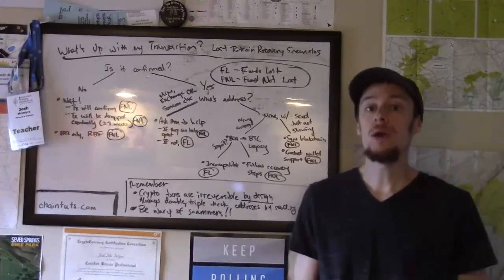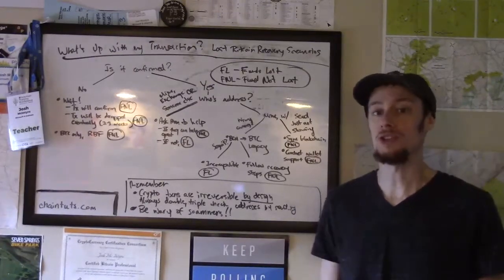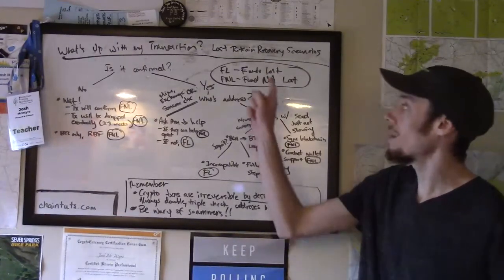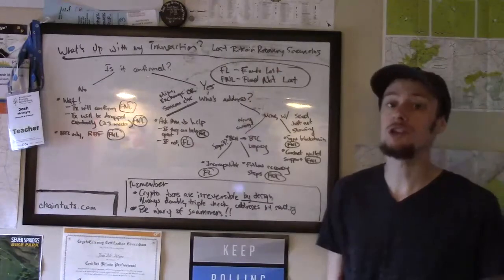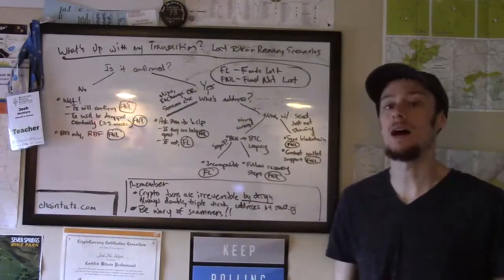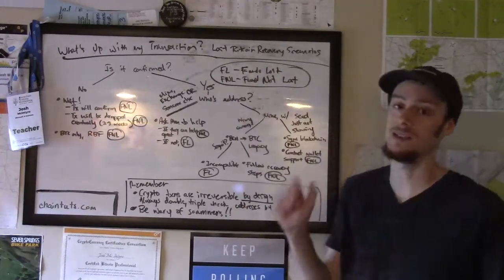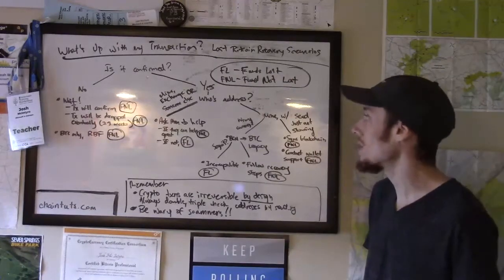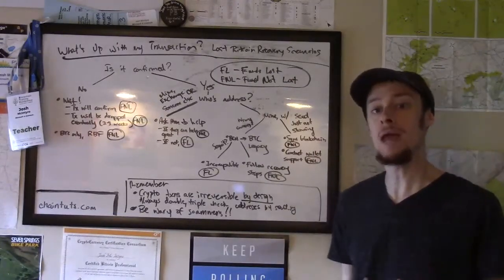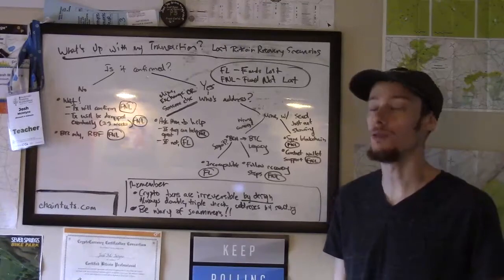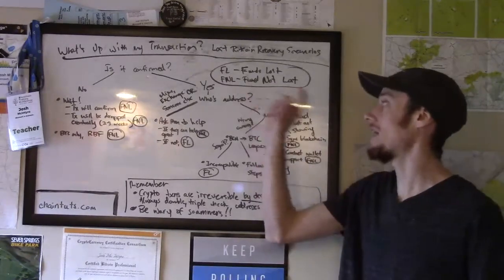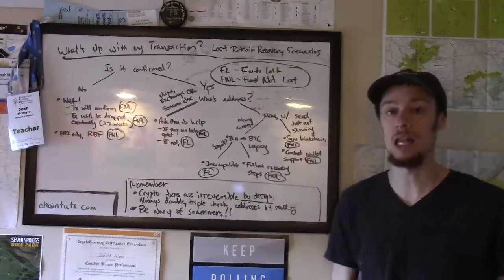So first, we need to go over a little bit of terminology for this flowchart. So I'm going to label scenarios in which your funds are permanently lost as FL, funds lost. And I'm going to label scenarios in which there may be a technical possibility of recovery as FNL for funds not lost.